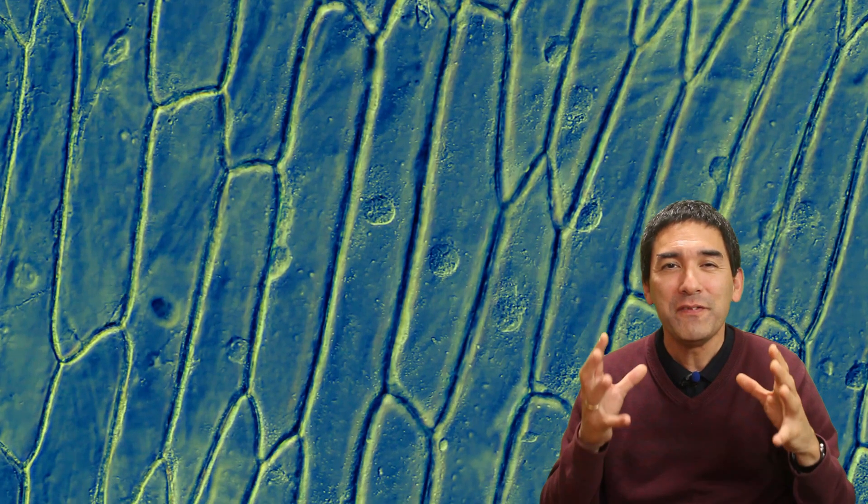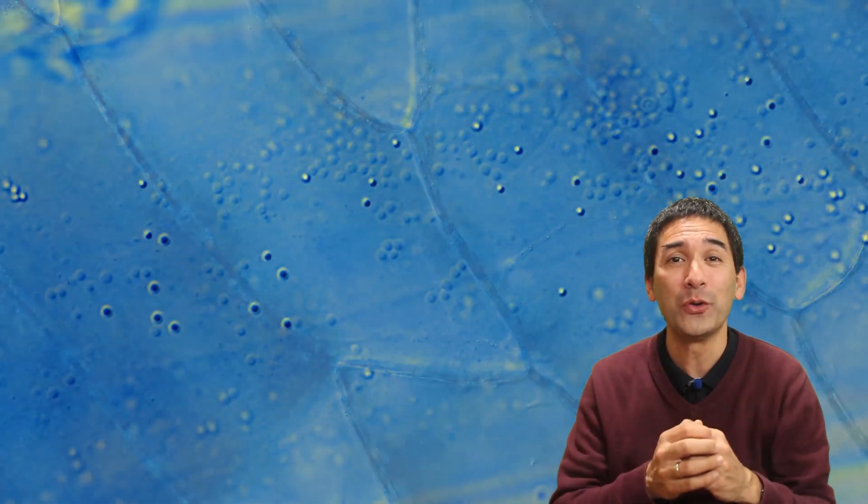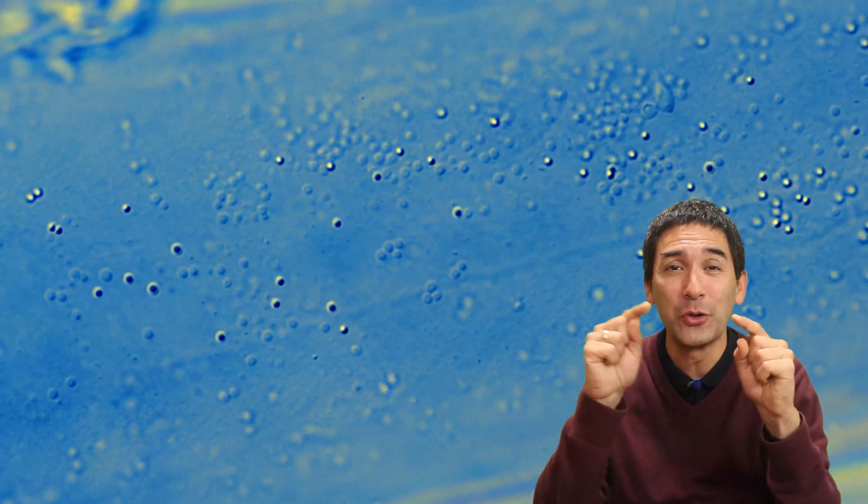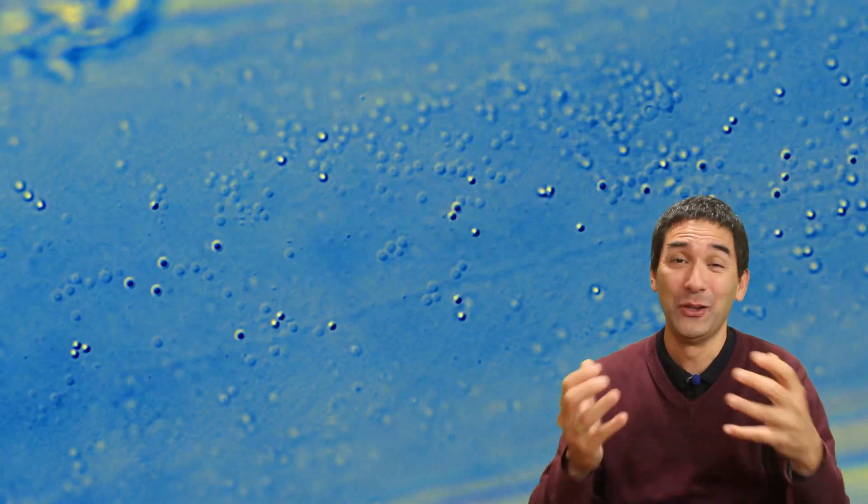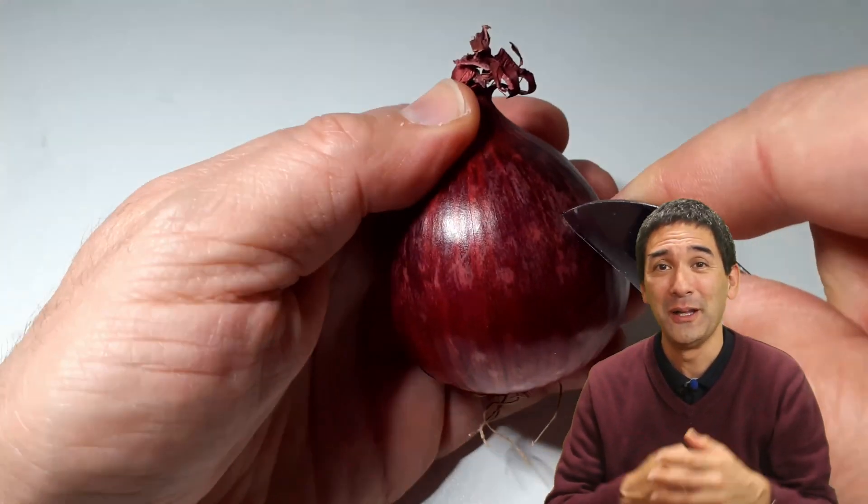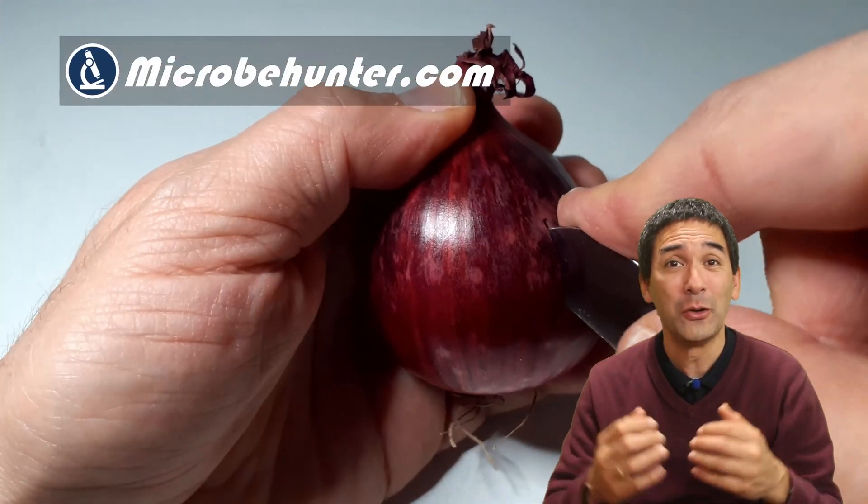So today we're going to have a very deep look into an onion cell, or actually several onion cells, which you can see over here. Specifically, I'd like to show you the movement that's going on inside an onion cell. Those little dots are vesicles. Hello and welcome, Microbe Hunter here. Yes, onions do belong to the beginner specimens.